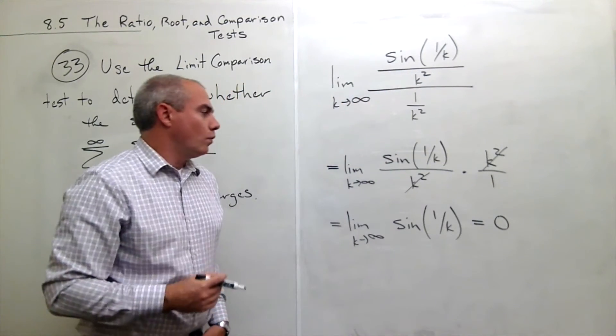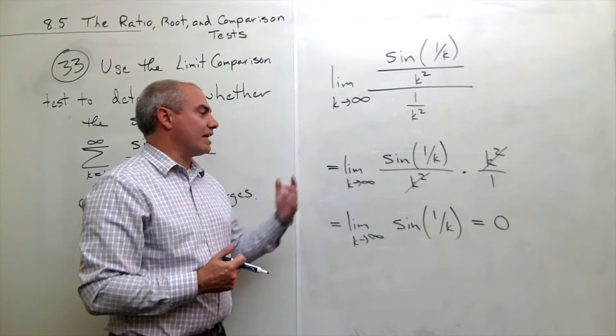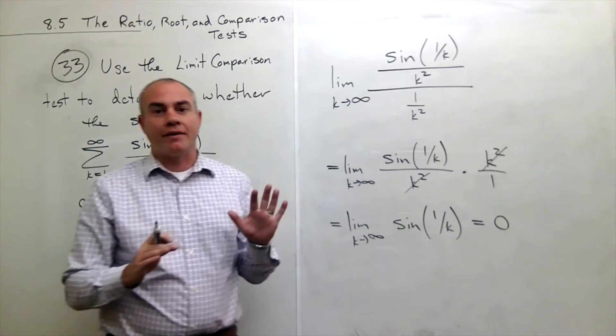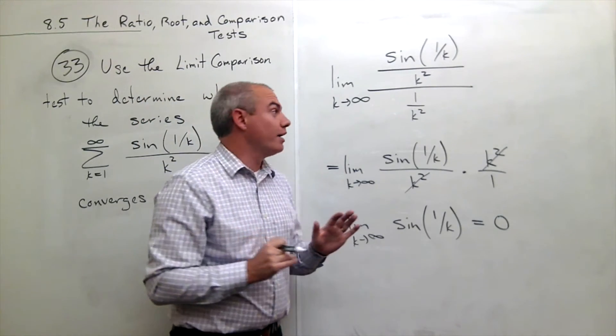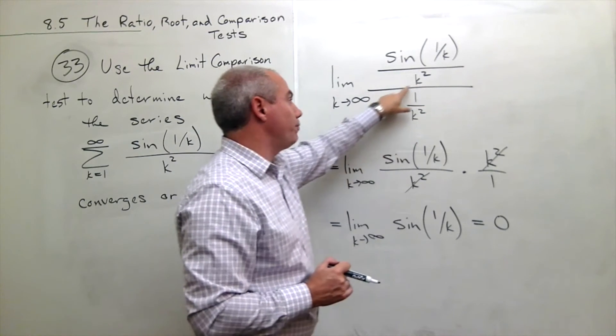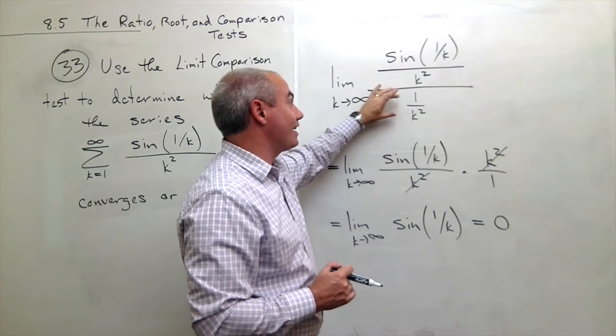Now, what happens if I get 0 in the limit comparison test? The rule says that if you get a 0 and the sum of what you put down here on the bottom, if that guy converges, then this guy converges.